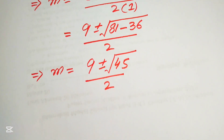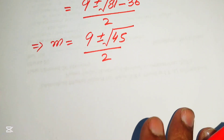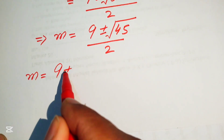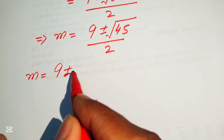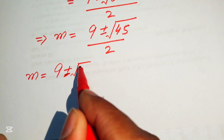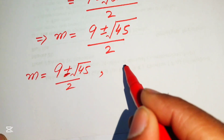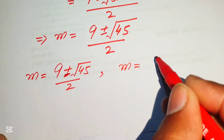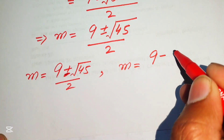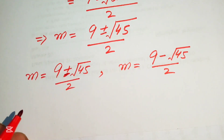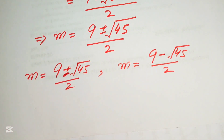These are the two values of m. The first value is m equals 9 plus the square root of 45, divided by 2. The second value is m equals 9 minus the square root of 45, divided by 2. Our next target is to find the corresponding values of n.